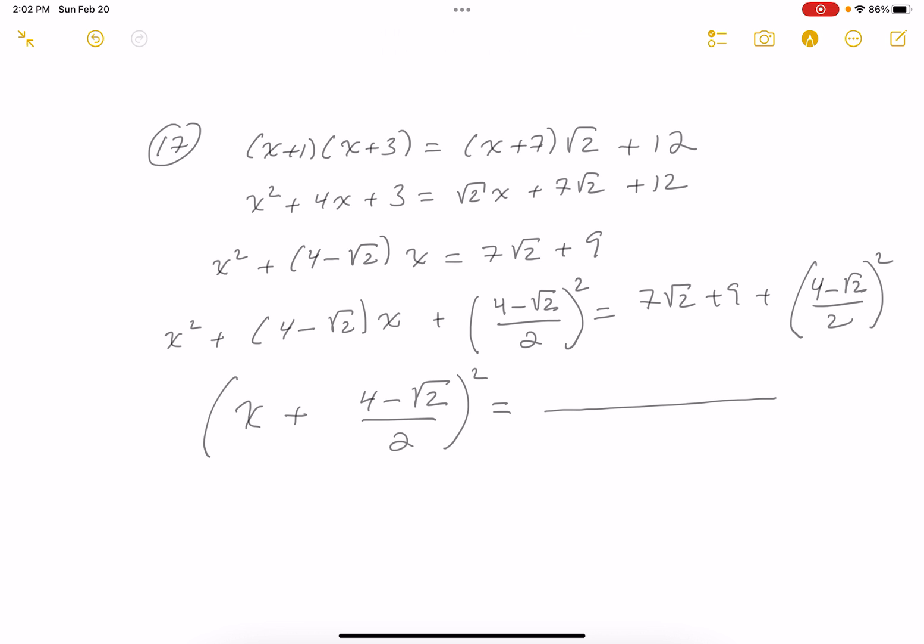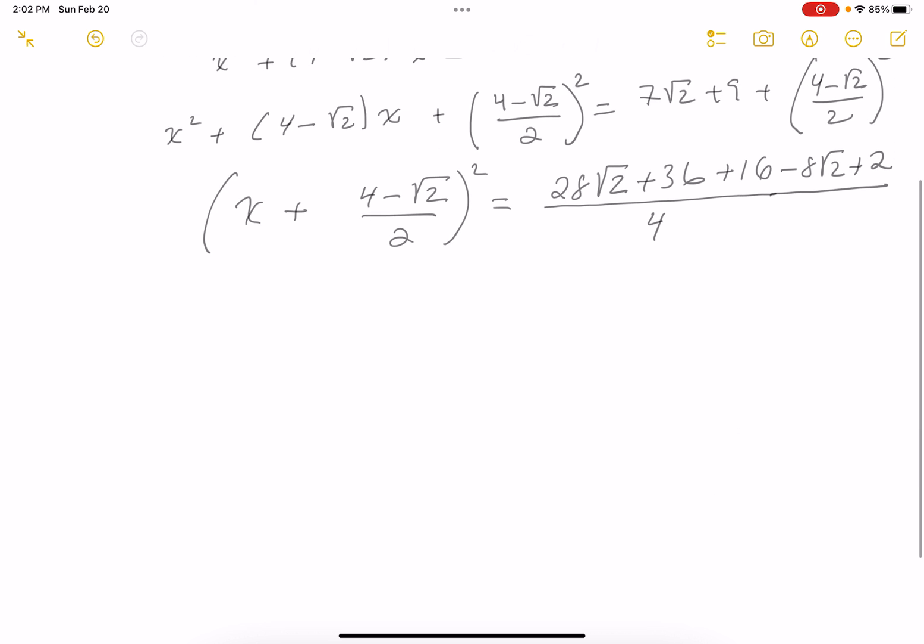Now, granted, there is work to do. I'm not saying there's not work. One thing is I want to write down the left side is now a perfect square. And what's that going to be? X plus 4 minus root 2 over 2 squared. And I'd like to simplify the right side. The first thing I notice about it, I have a 4 as a denominator, a common denominator. So it's going to be 28 root 2 plus 36.